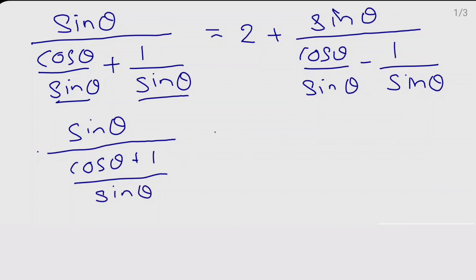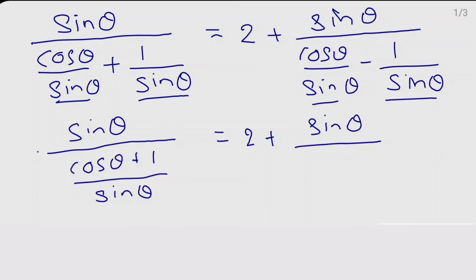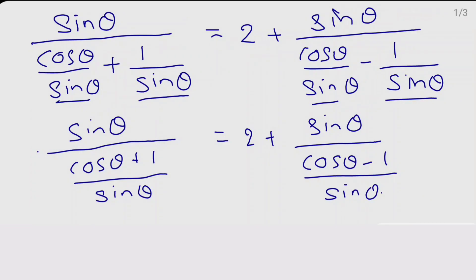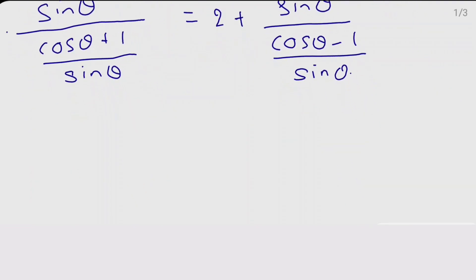On the RHS side, 2 plus sin θ as it is, and this divided by — here also take sin θ as LCM — so we get cos θ minus 1 divided by sin θ.